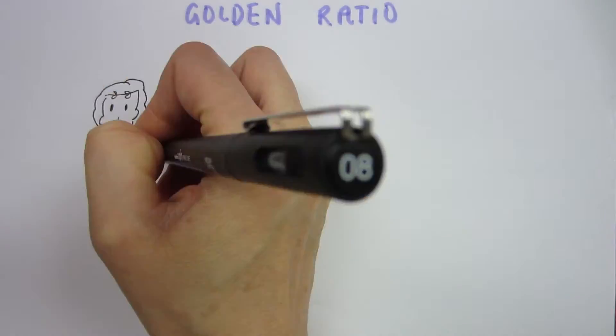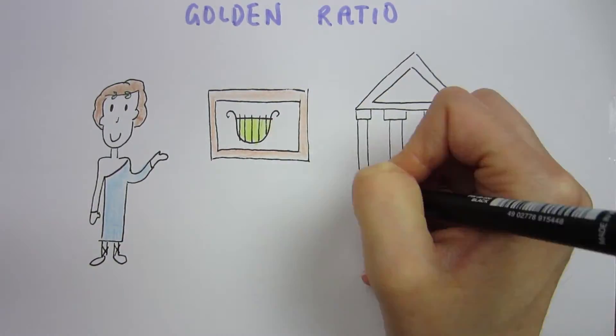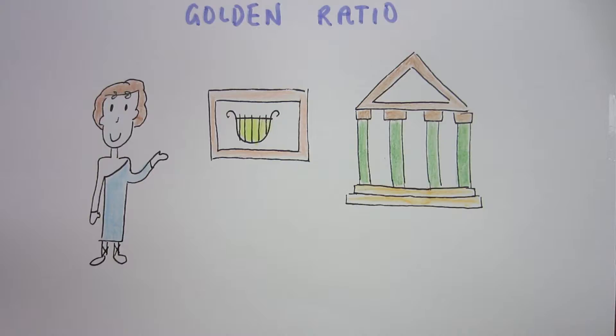This golden ratio was defined initially by the ancient Greeks and was manifested in art and architecture and is still prominent today. We could even say that the golden ratio is the formula of beauty itself.